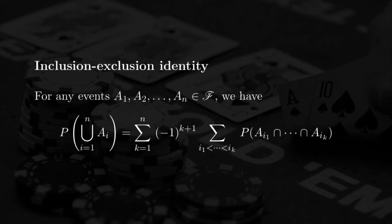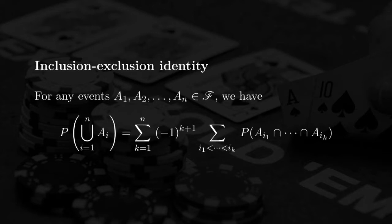You remember that from the axiom of a probability measure, the probability of a union is supposed to just be the sum of the probabilities of all the events — in this case, the sum for k equals 1 to n of the probability of A_k. However, this is only true when those events do not overlap — when they are mutually exclusive. But when those events overlap, we need to deal with all the possible intersections of events, including intersections of two, three, four events, and so on.